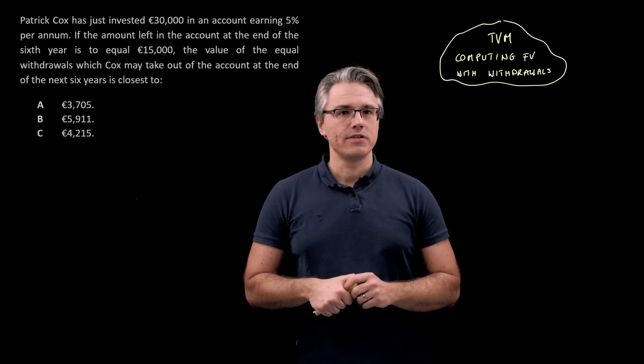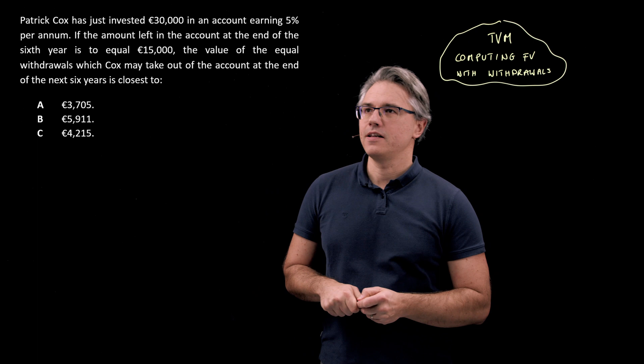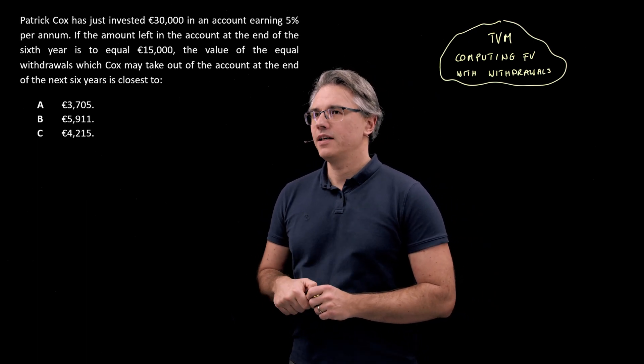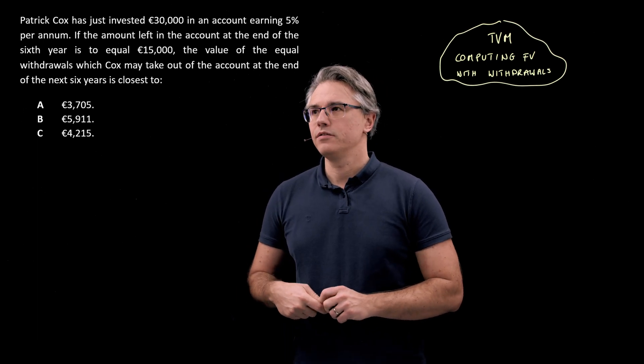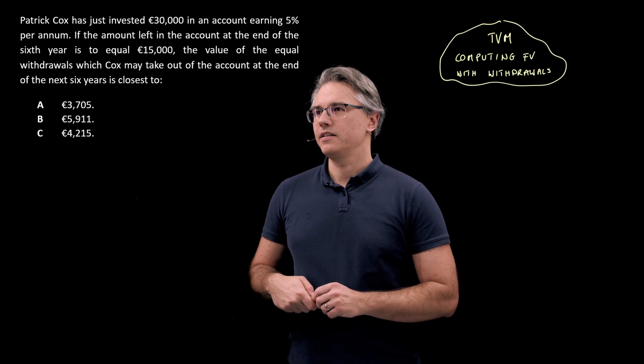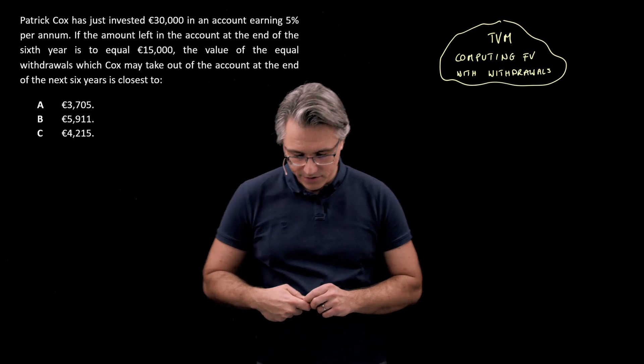So this is the question that I want us to have a go at. Patrick Cox has just invested €30,000 in an account earning 5% per annum. If the amount left in the account at the end of the sixth year is to equal €15,000, the value of the equal withdrawals which Cox may take out of the account at the end of the next six years is closest to...